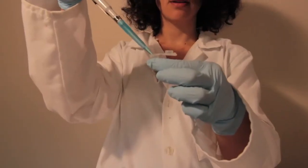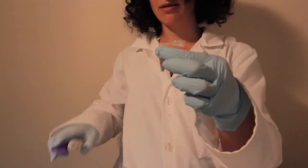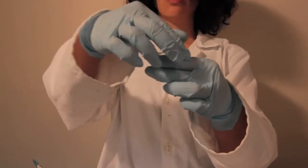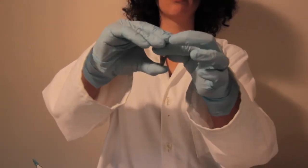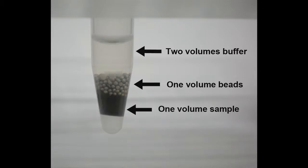Finally, add the reagent or buffer that you would like to homogenize your samples in. We recommend using a volume of buffer equal to twice the volume of your beads. For example, if you used 100 microliters of beads, add 200 microliters of buffer.